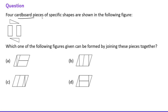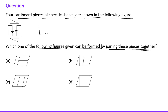Next question: 4 cardboard pieces of specific shapes are shown. Which figure can be formed by joining them together? By joining two pieces together you get a certain shape, and combining all four pieces results in the shape shown in option D. So option D is the correct choice.